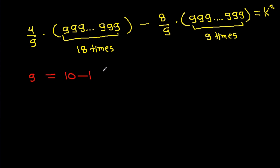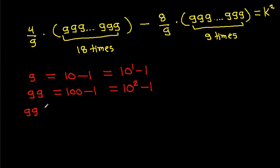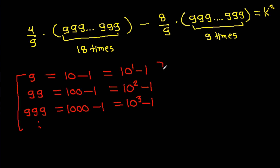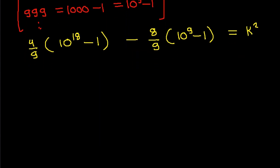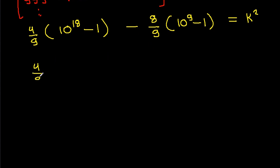And it is 4 by 9 times 9 times 1 written 18 times — it will be 99 written 9 times — minus 8 by 9 times and 9 times 1 written 9 times. Now, 99 is 100 minus 1, that is 10 power 2 minus 1. Similarly, 999 is 100 minus 1, that is 10 power 2 minus 1, and so on. Here it is 10 power 3 minus 1, and so on.